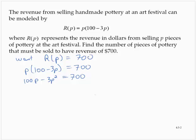So I have a polynomial equation. To solve it, I need to put it, I need the one side to equal 0. So I'm going to rewrite this in standard form. Subtracting the 700, I would have negative 3p squared plus 100p minus 700 is equal to 0.